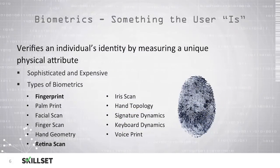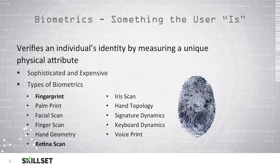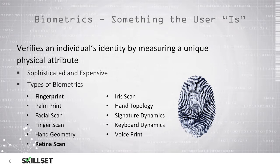Biometrics, or something that a user is, is becoming more popular with modern systems. Here we are attempting to verify an individual's identity by using some type of unique physical attribute that is part of the user. Biometrics are typically very sophisticated and can be very expensive. There are several different types of biometrics we can use to identify an individual. These include technologies which utilize the user's hand, such as their fingerprint, a palm print, hand geometry, or hand topology.